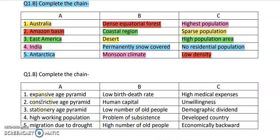Let us move further with the second complete the following chain. In the second we have: expansive age pyramid, constructive age pyramid, stationary age pyramid, high working population, and migration due to drought. You need to study the demographic transition theory as well as the population pyramid very thoroughly, as questions come from these topics every year.